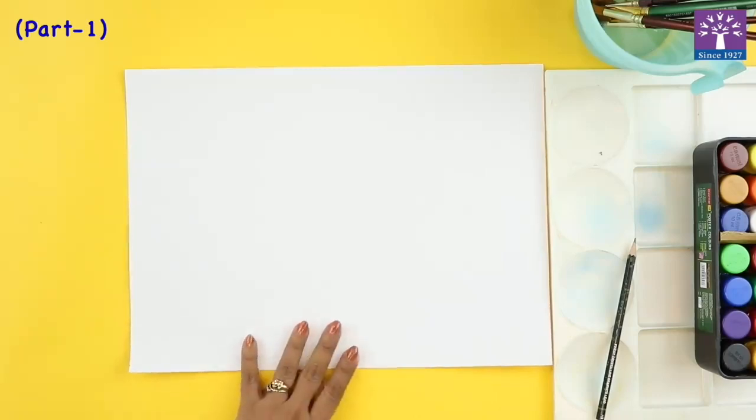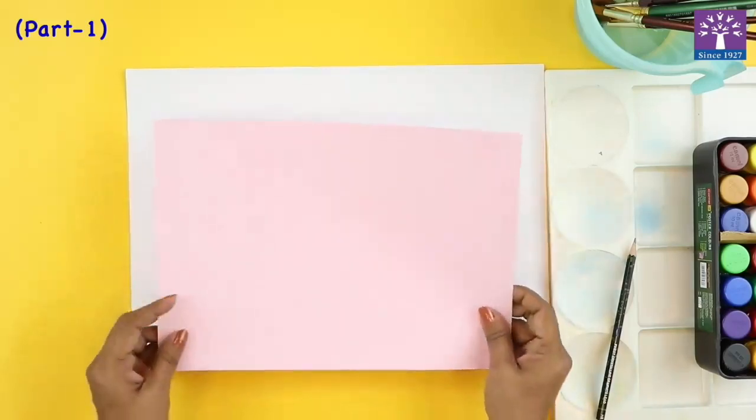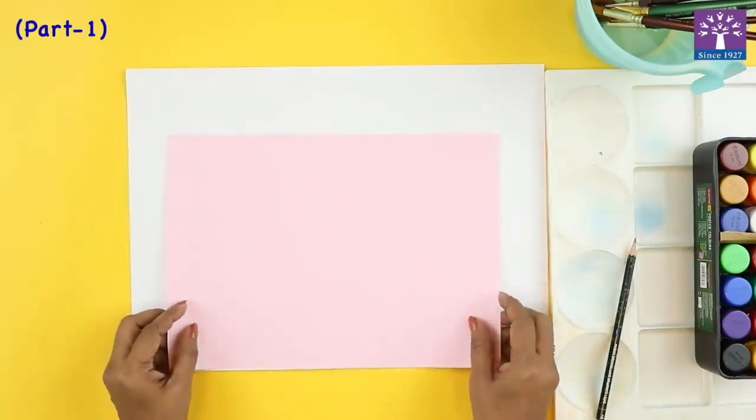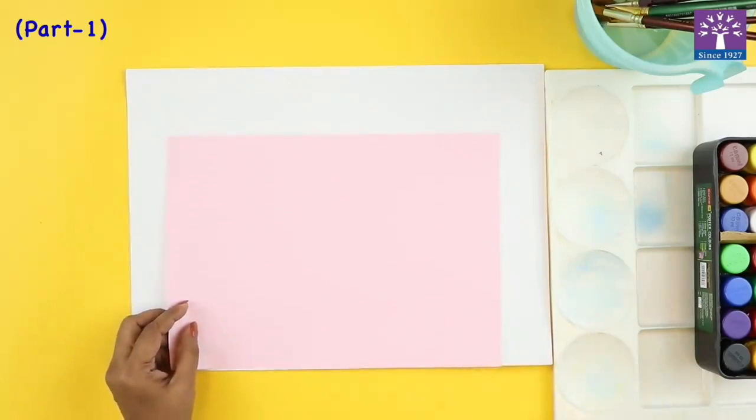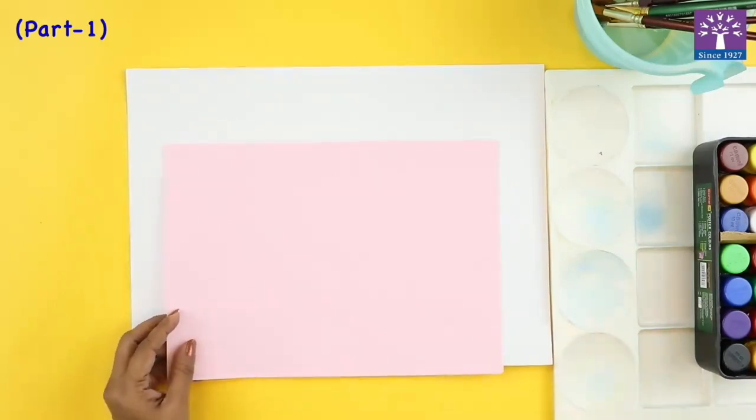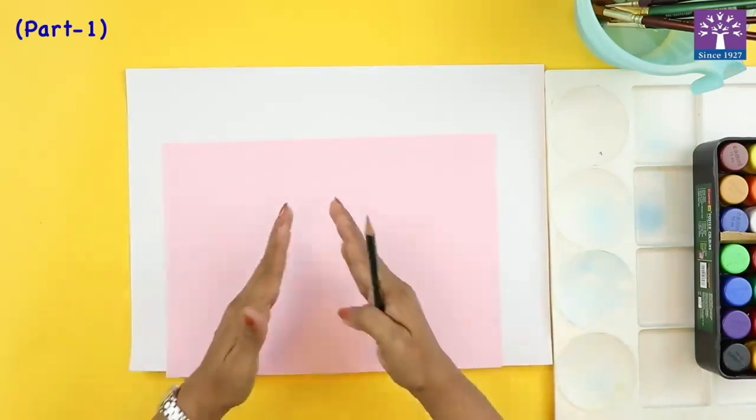Now, this is a drawing sheet, and we are going to take any rough paper. On this pink paper, I'm going to draw a shape of a mountain.